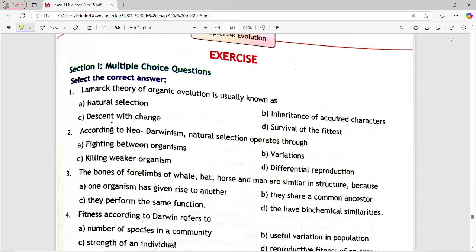First MCQ hai maare paas? Lamarque theory of organic evolution is usually known as, options are, natural selection, inheritance of acquired characters, descent with change, survival of the fittest. Answer is option B, inheritance of acquired characters.